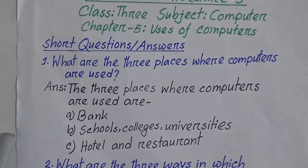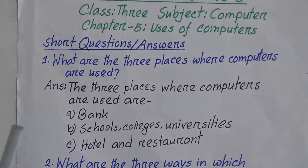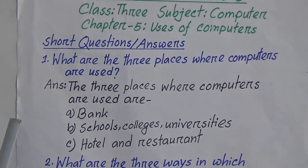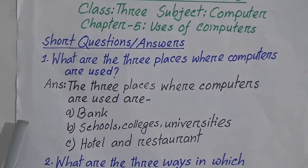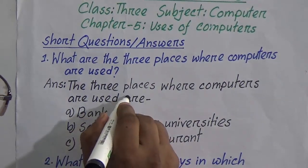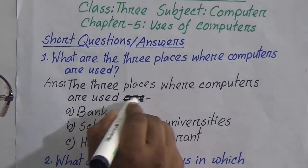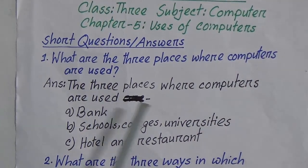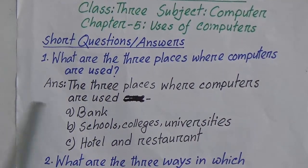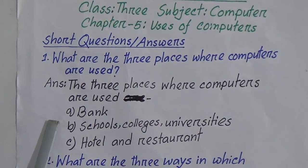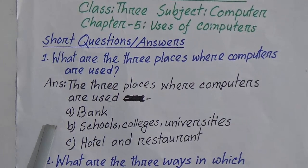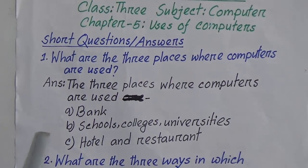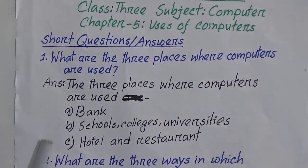Let me correct one thing. The three places where computers are used — we will cut down the word 'are' at the end of the question. You do not need to write it down. The three places where computers are used are: A) Bank, B) Schools, colleges, universities, C) Hotel and restaurant.